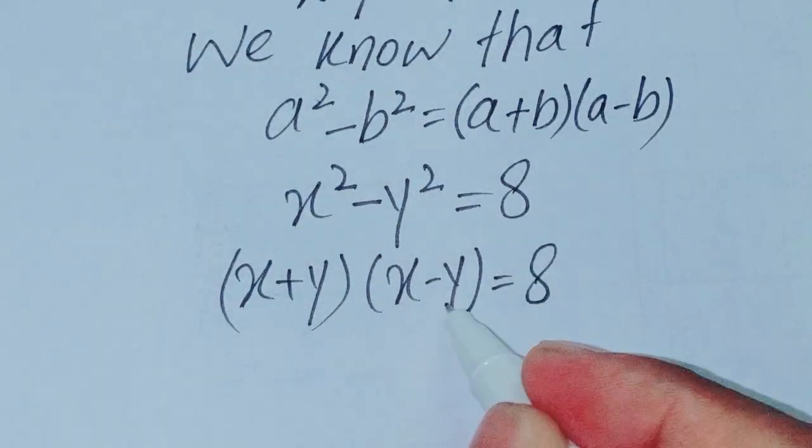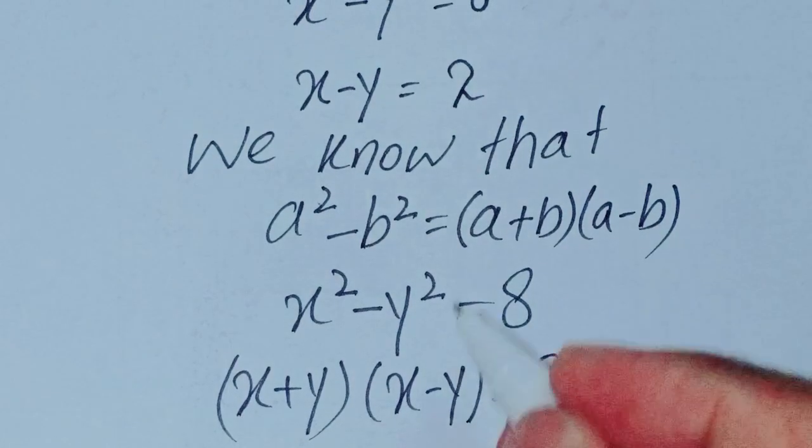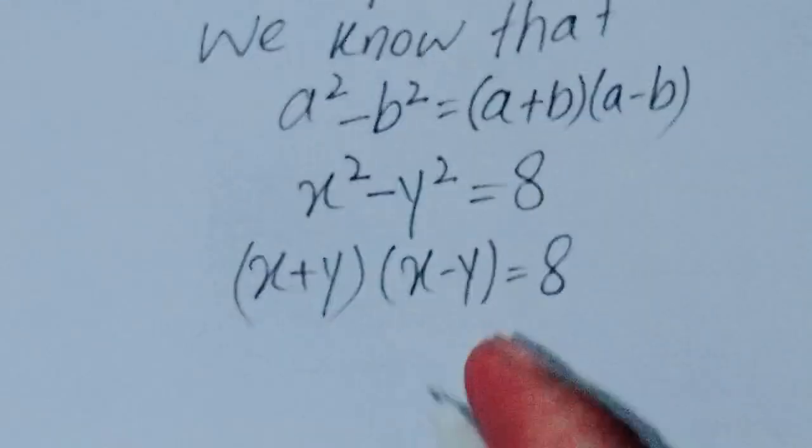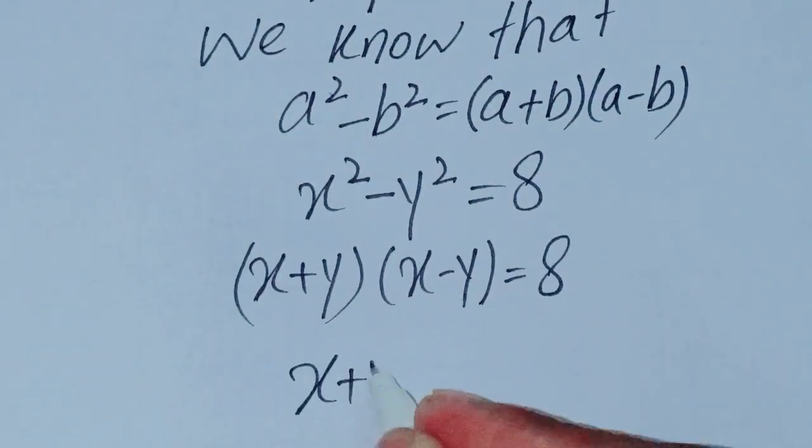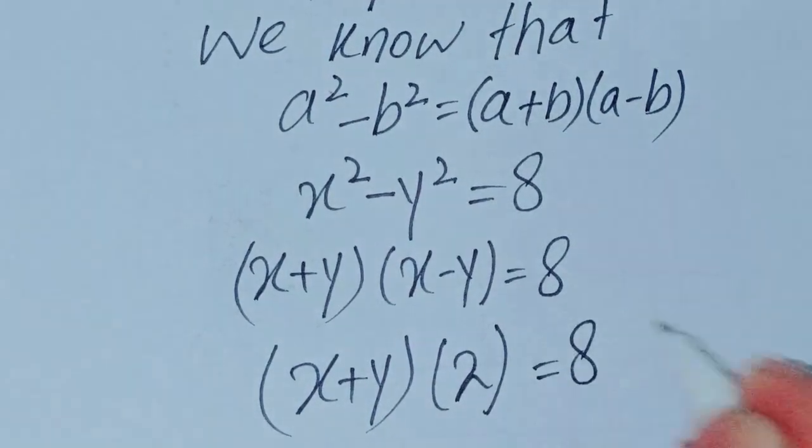So x minus y is equal to 2. Now put x minus y is equal to 2. So x plus y into 2 is equal to 8.